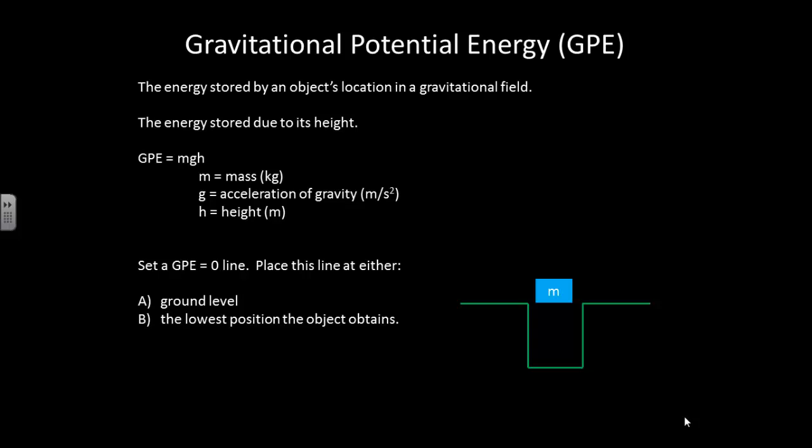Often we will either consider this to be the ground level, or we'll just consider it to be the lowest position the object obtains. So if you look at this particular situation, it might not make sense to consider quote unquote ground level to be my zero, but the bottom of the hole to be my zero. For if I dropped the object, the mass, it would fall down to the bottom of the hole.